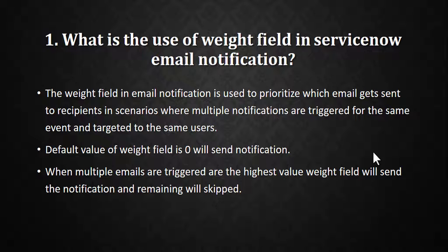In other words, the weight field is used to prioritize notifications when triggered to the same user. If two notifications are being sent to the same user, the weight field decides which one to send. The default weight field value is zero; any value greater than zero has the highest precedence.